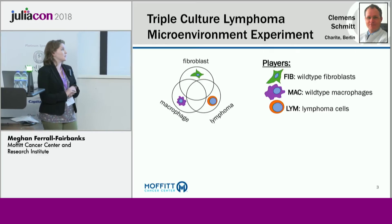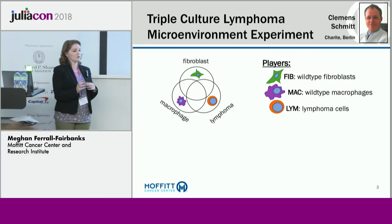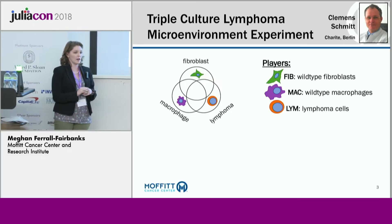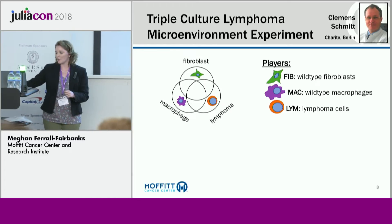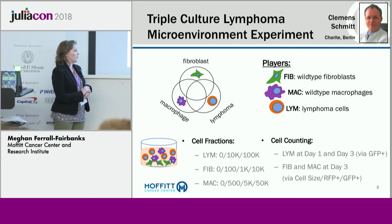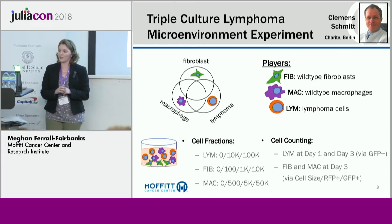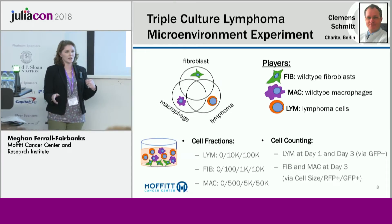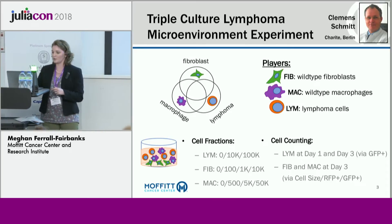With data from our collaborators, Dr. Schmidt, they set up an in-vitro system where they co-cultured fibroblasts, macrophages, and lymphoma, creating a very large dataset. They tried different initial conditions of each of these three cell types, all in triplicate. This gives you an idea of the kind of biological data we're using and how we can apply Julia.